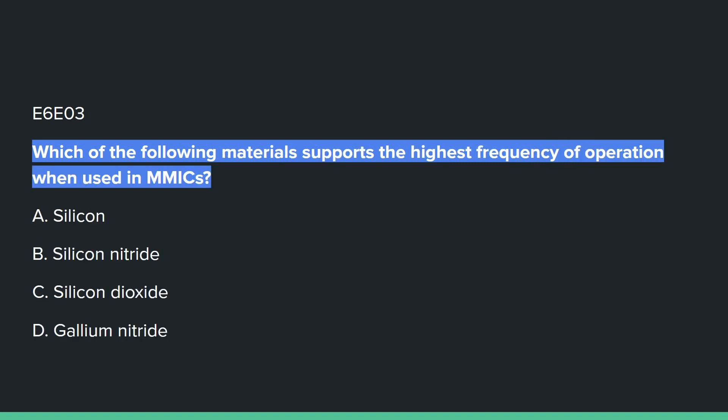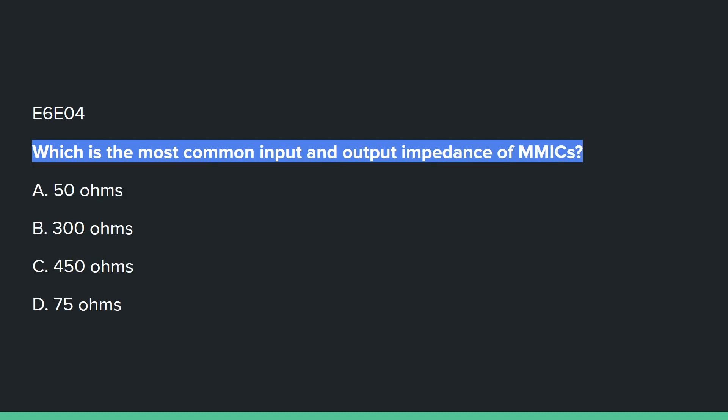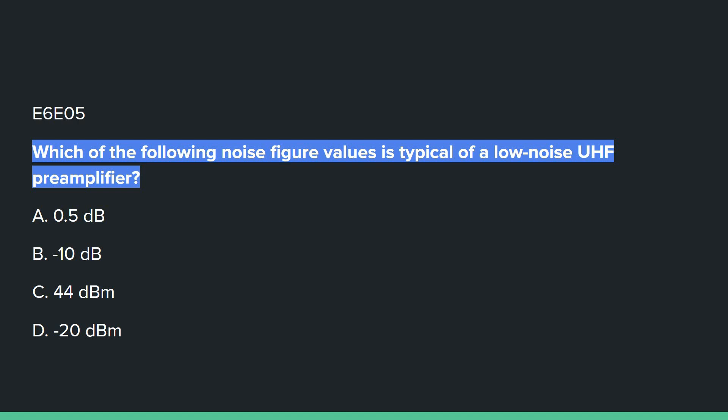E6E03: Which of the following materials supports the highest frequency of operation when used in MMICs? D, gallium nitride. E6E04: Which is the most common input and output impedance of MMICs? A, 50 ohms. E6E05: Which of the following noise figure values is typical of a low noise UHF preamplifier? A, 0.5 dB.